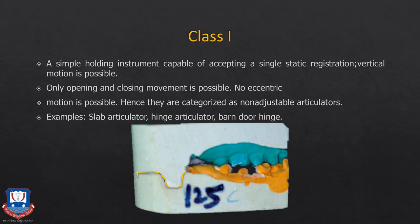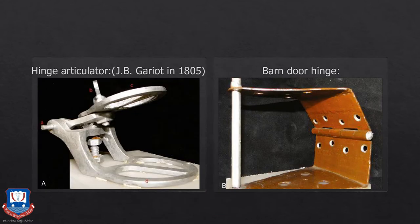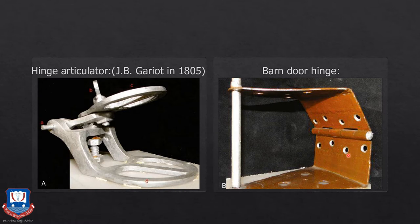Another type of class one articulator is a hinge articulator, which is just a simple hinge that moves up and down. Another type is a barn door articulator — called so because it resembles the hinges of a barn on a farm. The difference between the two is that the hinge articulator does not have an incisal rod or vertical stop, whereas the barn door articulator is slightly better and has an incisal pin.